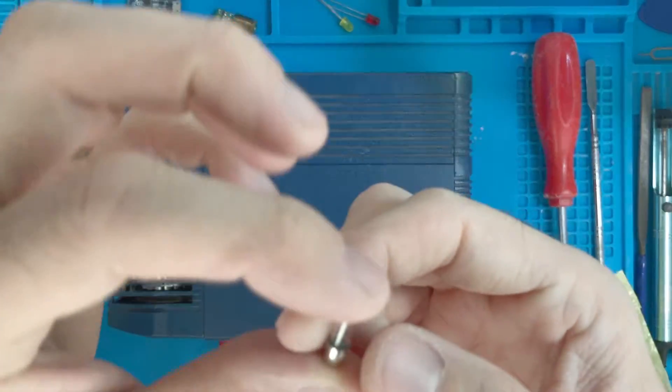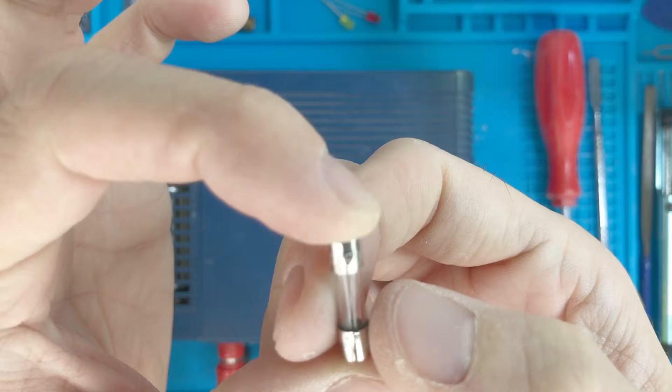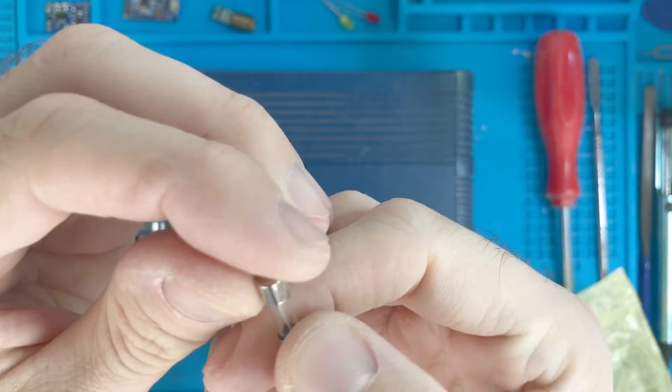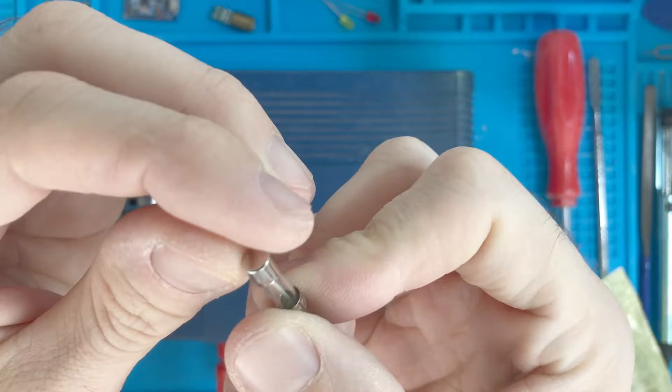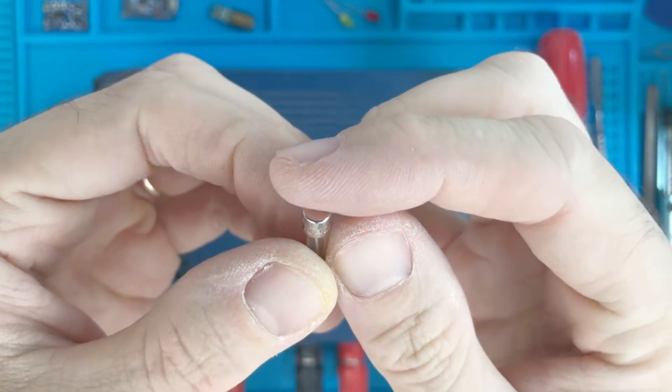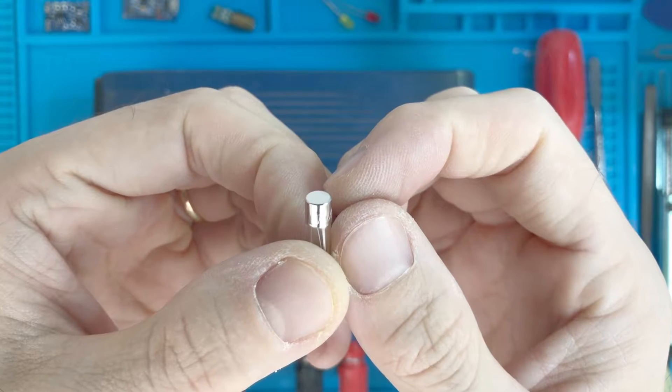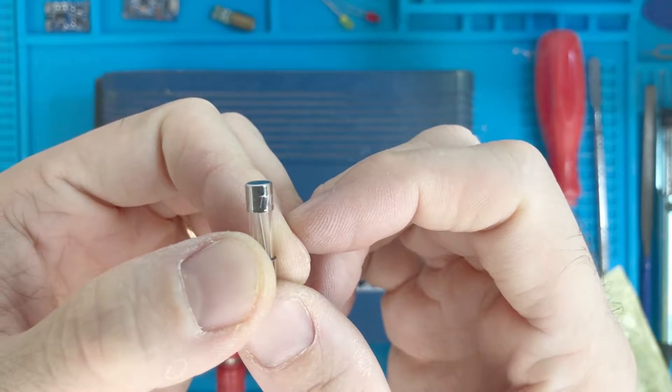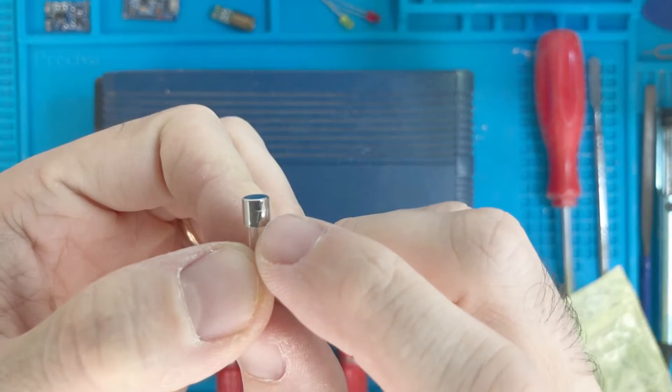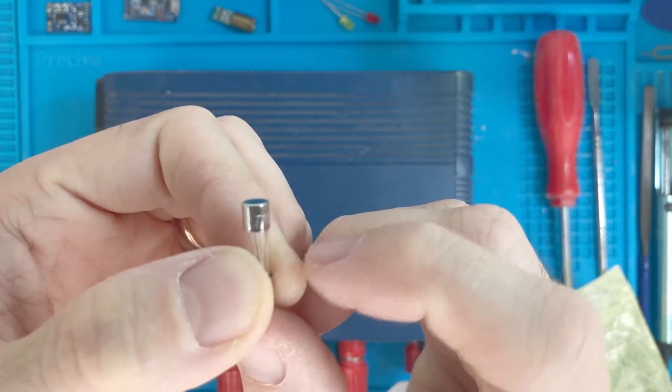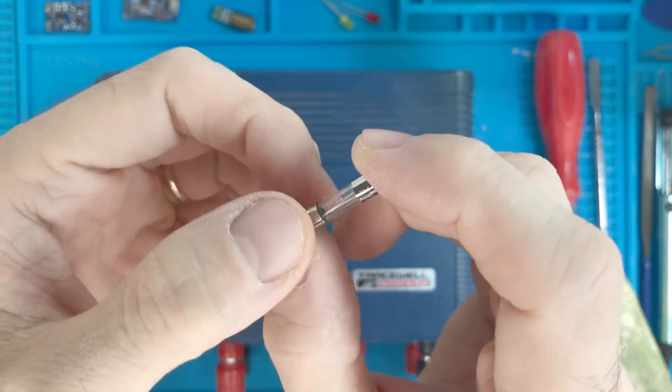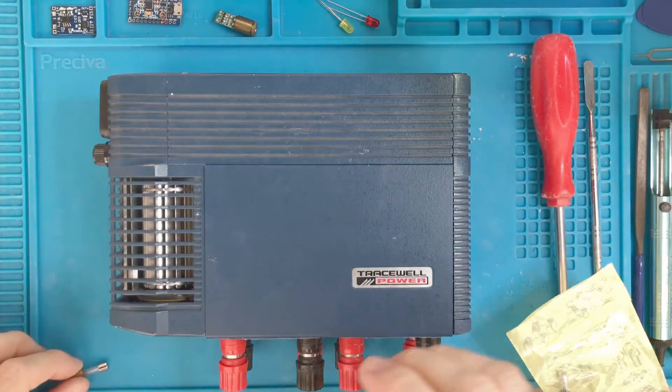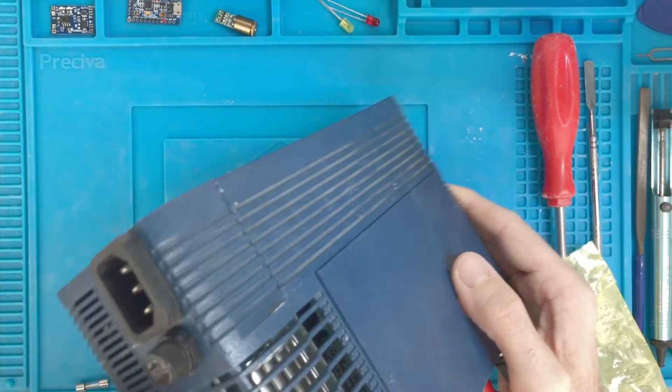So let's see, it's a 250 volt and 10 amp fuse. The T stands for retarded, so it will survive rapid surges of current which sometimes happens.